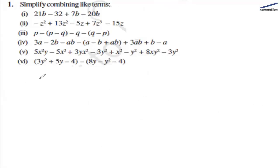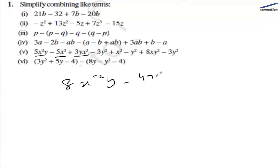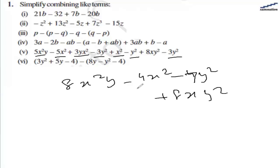For the fifth part, we have 5x square y. Let's combine like terms, so we have 8x squared y. Then combining minus 5x square and x square gives minus 4x square. Now we have minus 3y square and y square terms, giving minus 4y square. And minus 3y square minus y square minus 3y square becomes minus 7y square. And plus 8xy square. So that will be the answer.